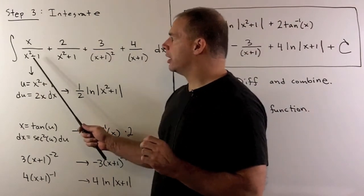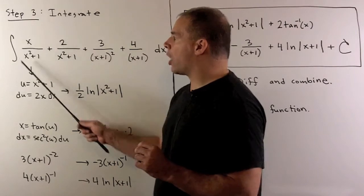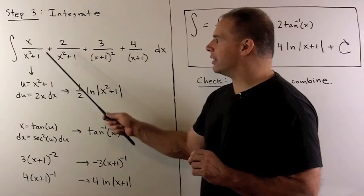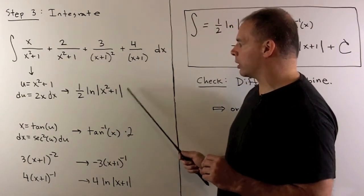In our first case, I notice derivative of x squared plus 1 is 2x. So this is almost in the form f prime over f. We're going to let u be equal to x squared plus 1, and this integral contributes 1 half natural log absolute value of x squared plus 1.